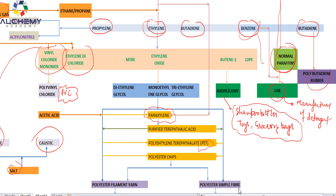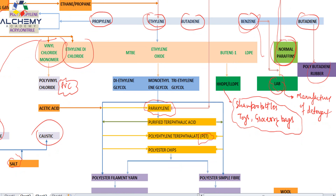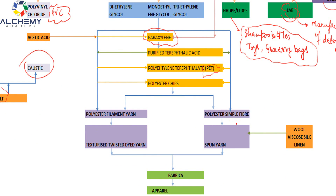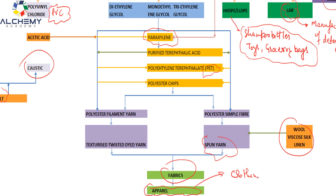From polyester chips we can make polyester filament yarn or polyester staple fiber. Paraxylene is produced by catalytic reforming of petroleum naphtha. From polyester staple fiber combined with wool or viscose silk we get spun yarn, and from polyester filament yarn we get texturized yarn — from both of these we get fabrics, and ultimately the final product is apparel — the clothing industry.